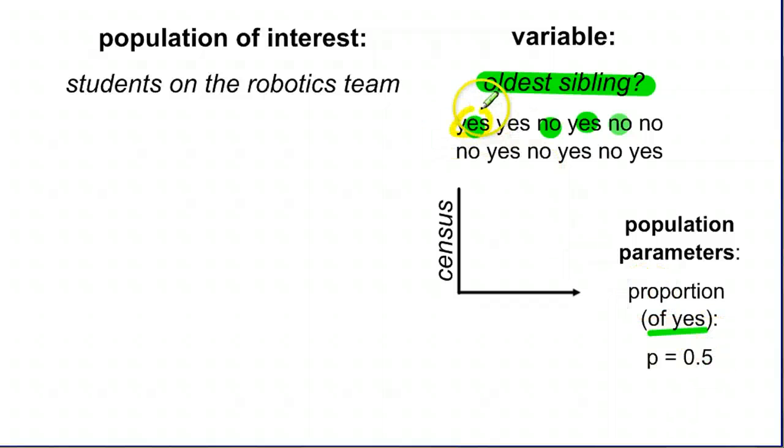In this case, we're going to say the proportion of students who said yes. We have a yes, two, three, four, five, six. Six yeses. So six out of 12 total would be 0.5. That's why we have our P equals 0.5. That's from taking a census from asking everyone.